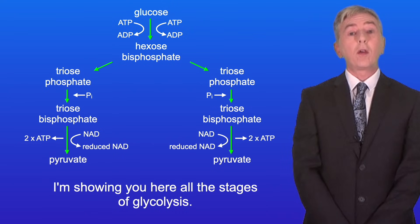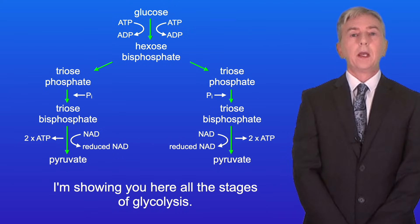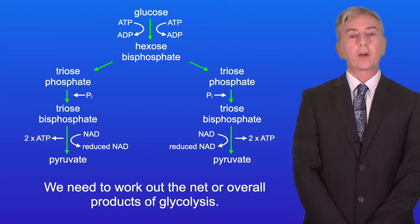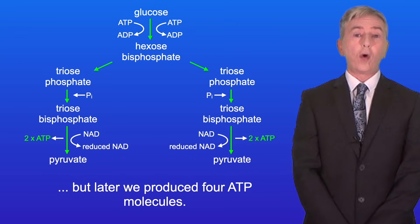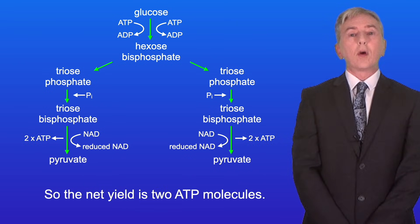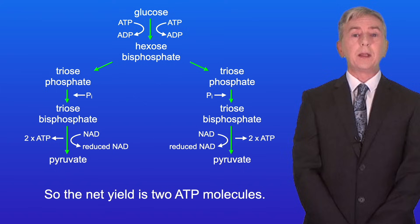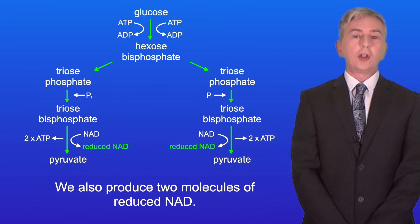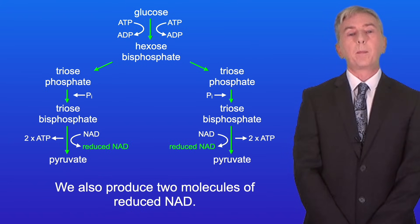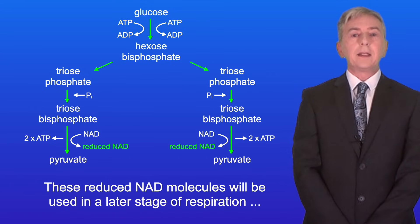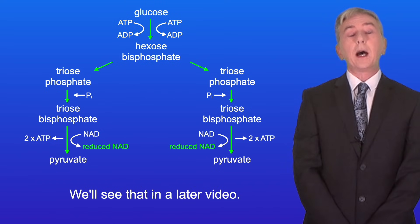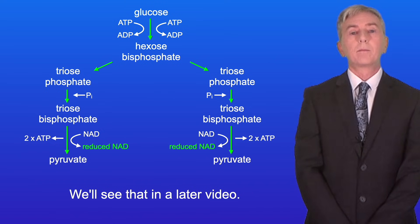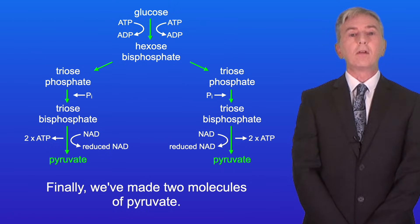Here are all the stages of glycolysis. We need to work out the net or overall products of glycolysis. At the start we used two ATP molecules, but later we produced four ATP molecules, so the net yield is two ATP molecules. We also produced two molecules of reduced NAD. These reduced NAD molecules will be used in a later stage of respiration called oxidative phosphorylation. And finally, we've made two molecules of pyruvate.